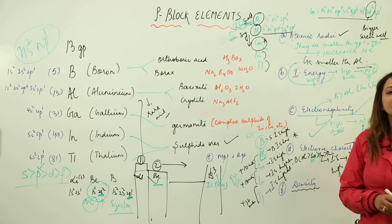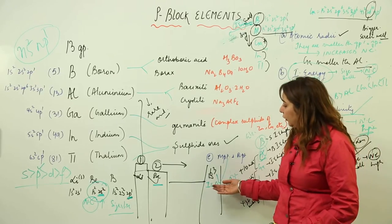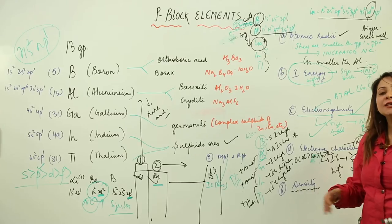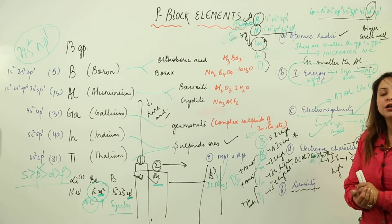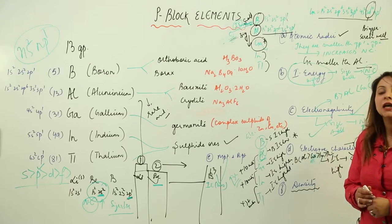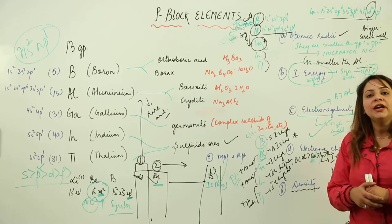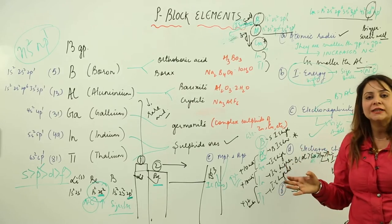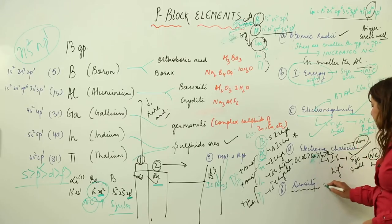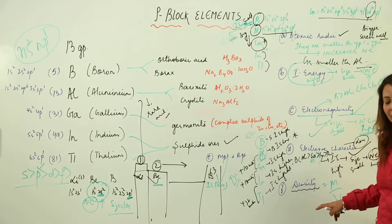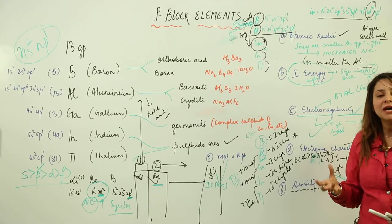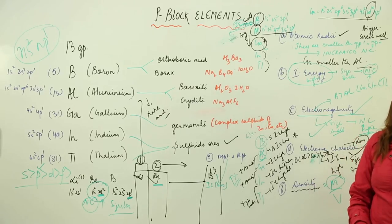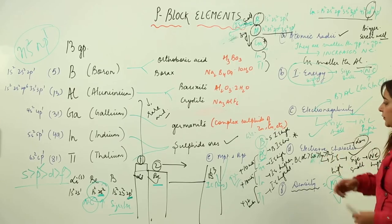Regarding density: Group 13 elements possess higher density than Group 2. As we move down the group, density is expected to decrease as size increases, but actually the increase in atomic mass going down is much greater than the increase in size. Since density is mass per unit volume, the larger mass dominates and density goes on increasing as we move down Group 13.